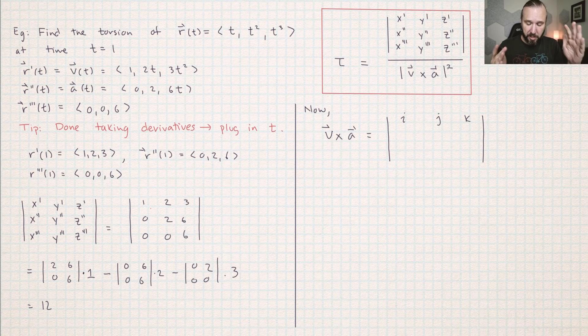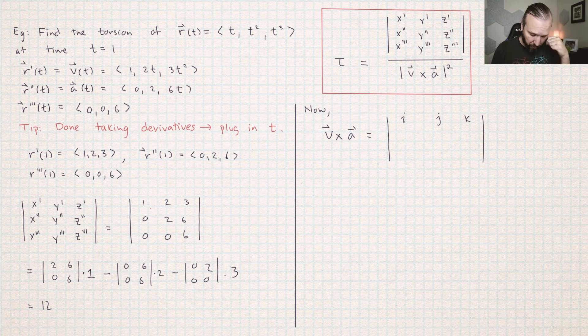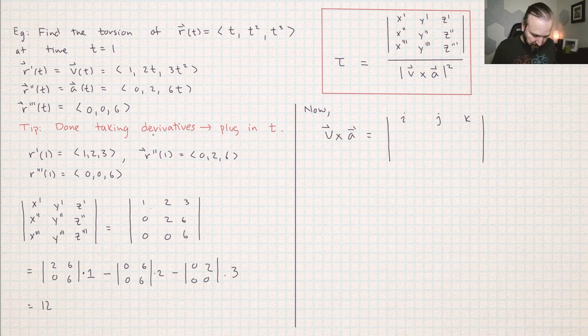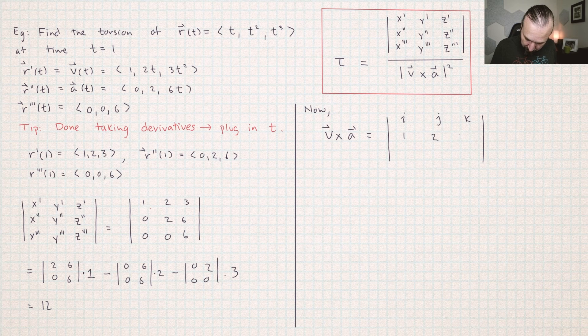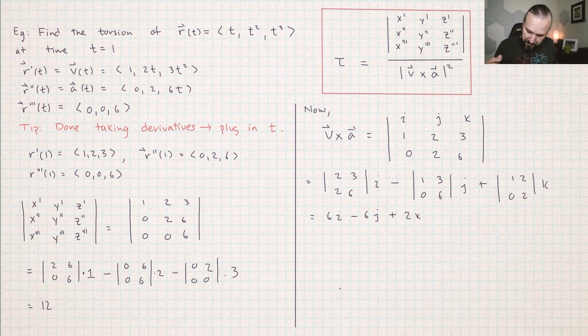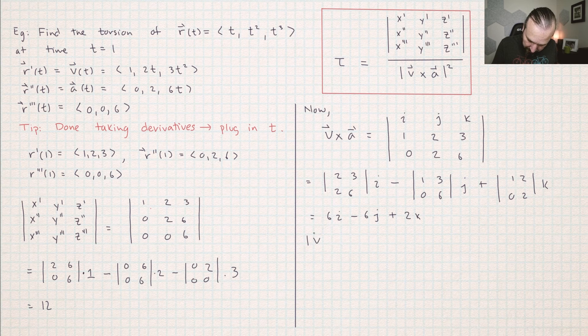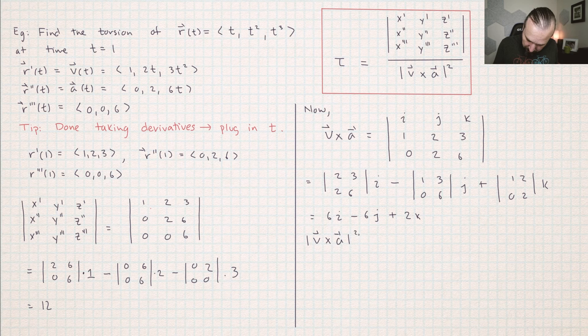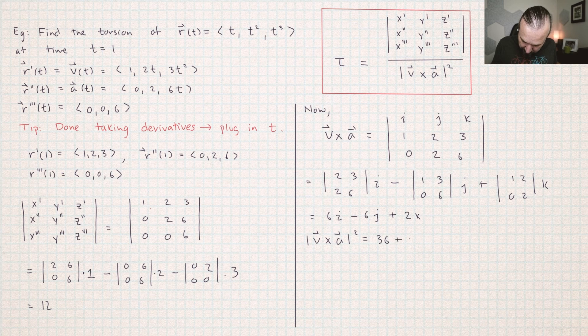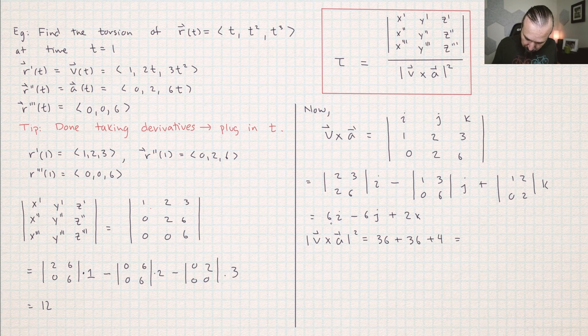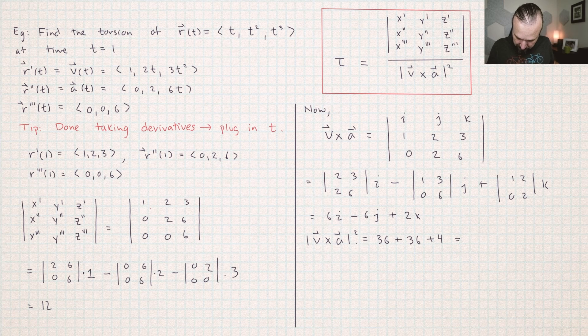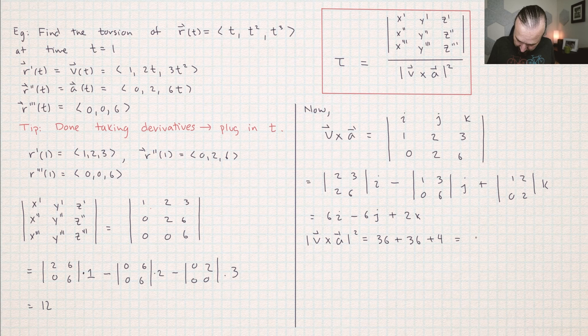So now I'm doing the denominator. So the denominator is the square of the magnitude of a cross product. So let me just set up that cross product. I need to do the velocity, that's the first derivative, and the acceleration, that's the second derivative. So here's the velocity cross the acceleration. So for v cross a, I got 6, negative 6, 2. So what we need to do is calculate the square of the magnitude of v cross a. So all I need to do is plug this into a magnitude of a vector formula. So I'm getting 36 plus 36 plus 4, because you just do the squares of all of the components. So 40, 50, 60, 70. I'm getting 76 for this denominator.